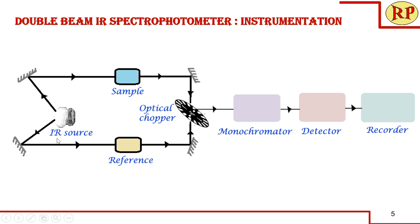We can also use a beam splitter where it splits the single beam into two equal beams — one passes through the sample and the other through the reference. We assume that the reference does not absorb any IR radiation; in case it does, the absorption will be nullified during comparison with the sample. Each covalent bond within the molecule absorbs IR radiation at a particular frequency, and after absorbing that light, the remaining light is transmitted.